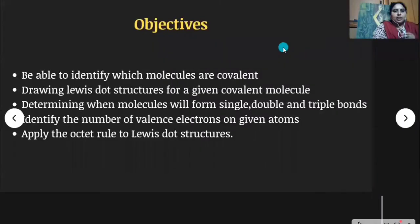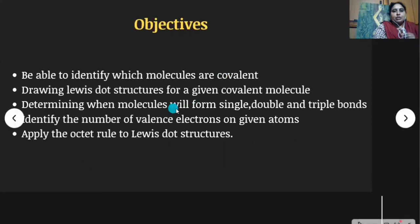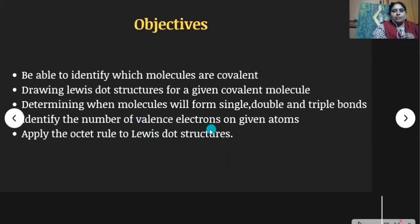These are the learning objectives from this topic. Students are able to identify which molecules are covalent and they can draw the Lewis dot structures for a given covalent molecule. They also determine when molecules will form single, double and triple bonds, identify the number of valence electrons on given atoms, and apply the octet rule to Lewis dot structures.